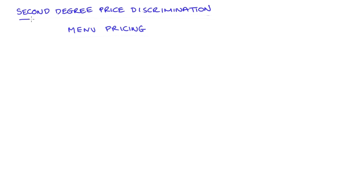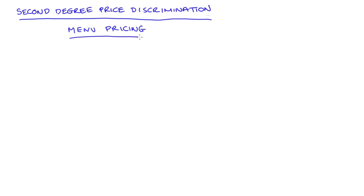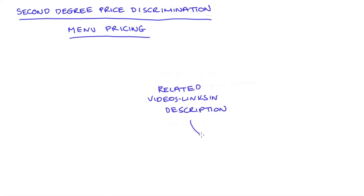Hi everyone! In this video I'm going to talk about a common way of thinking about second degree price discrimination, and that is as menu pricing. The literature on this stuff is really big so this video is really just an introduction. I hope to do more videos that get into the details in the future, and I'll link to any related videos in the description. You can also check my playlist on my channel on price discrimination.